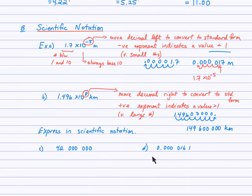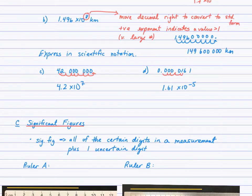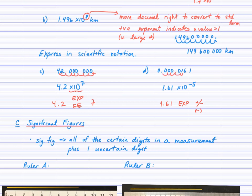Here are a couple of values — express these in scientific notation. We have 4.2 times 10 to the 7, moving the decimal 7 places, and 1.61 times 10 to the negative 5, counting back 5 places. Be prepared to see values in scientific notation. Your calculator has a button EXP or EE — those are the buttons you use to enter a value in scientific notation. This one would be entered as 4.2 EXP 7, and the other as 1.61 EXP negative 5.